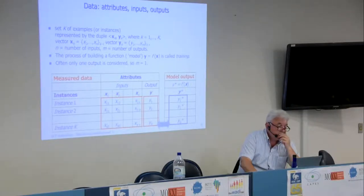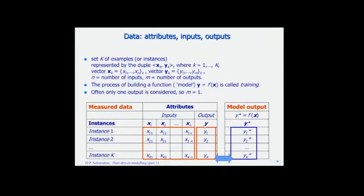How do we collect data? Data is arranged in blocks with inputs and outputs. These are called instances — every observation is called an instance or example in machine learning terminology. What we want is that the model output F_model is close to measured data Y. We calculate the mean squared error and want to minimize it.